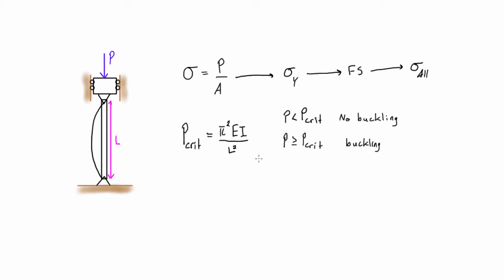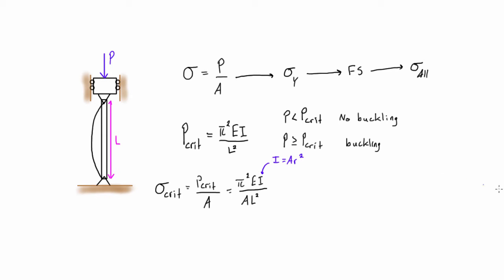This expression for P critical is called Euler's formula. What we want to do is rework it a little bit to go from P critical to the critical stress. So if stress is equal to P over A, then the critical stress is equal to P critical over the cross sectional area. We already have the expression for P critical, so the critical stress is equal to pi squared EI over AL squared. Another way we can write I, the moment of inertia, is I equals AR squared, where A is the cross sectional area and R is the radius of gyration.